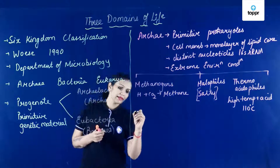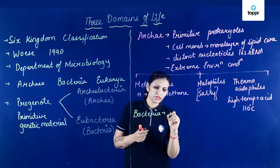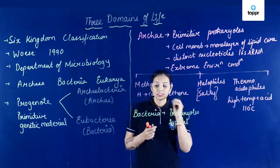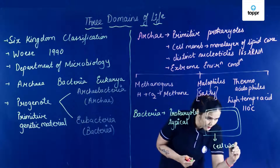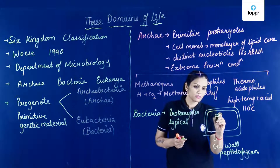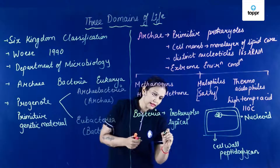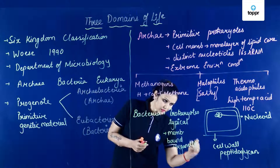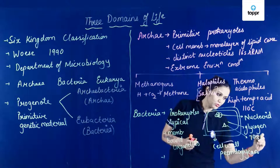Now coming to the second domain which is Bacteria. Is Bacteria ke andar unhone kaunse rakha? Prokaryotes rakha — these are typical prokaryotes. This typical prokaryotes ke andar distinguishing features kya hai? They have the cell wall which is made up of peptidoglycan, that is N-acetyl glucosamine and N-acetyl muramic acid. In ke paas true nucleus absent hai. Naked DNA coiled hai — nucleoid. Membrane bound organelles absent hai. And they have glycogen as the reserve food material. And 70S type of ribosome is present in them.